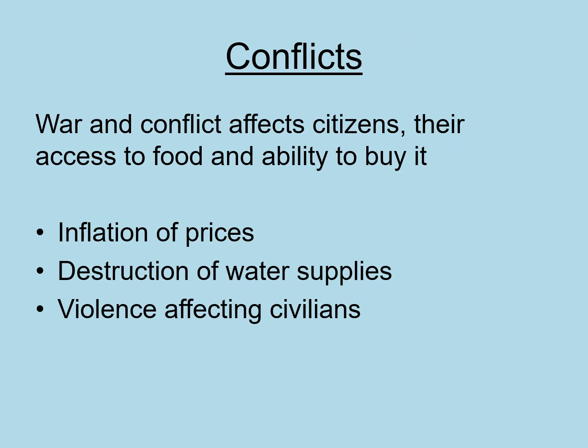The last factor affecting food availability is conflict. War and conflict affects citizens' access to food and their ability to buy it. Causes include extreme inflation driven by war impacting the economy, destruction of water supplies, and violence preventing civilians from safely accessing food. Conflict also puts higher strain on health services, which detracts resources from other essential services.